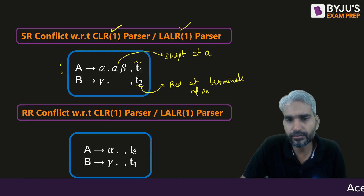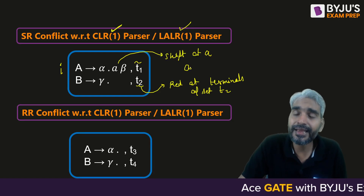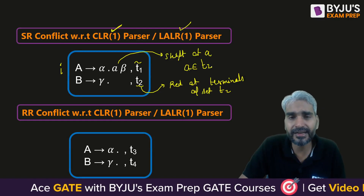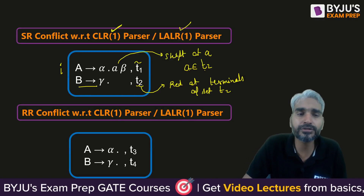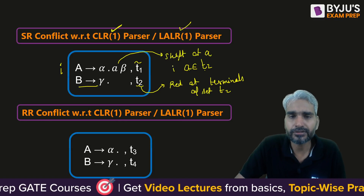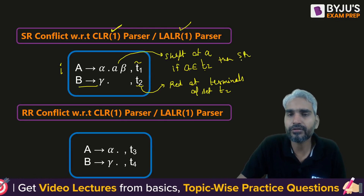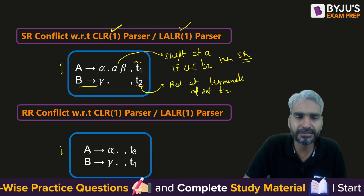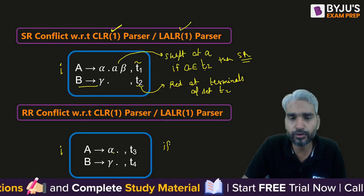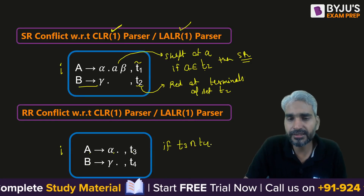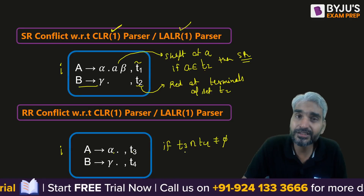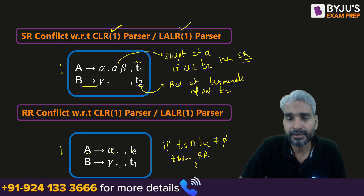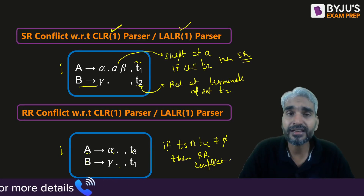So for SR conflict in CLR1/LALR1: if terminal a — for which we have a shift action — also belongs to lookahead set T2, then on that terminal there will be both a shift entry and a reduce entry for B→γ, giving SR conflict. For RR conflict: if A→α is reduced on terminals of set T3 and B→γ is reduced on terminals of set T4, and T3 ∩ T4 ≠ ∅, then there is at least one common terminal on which both are reduced, giving RR conflict.